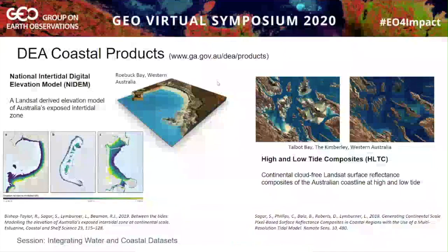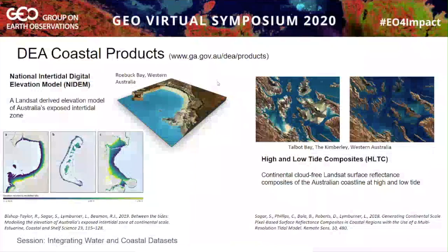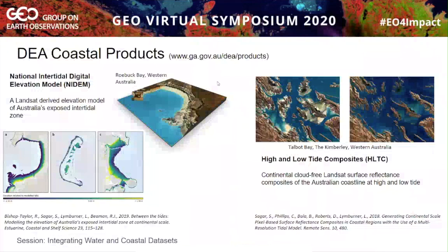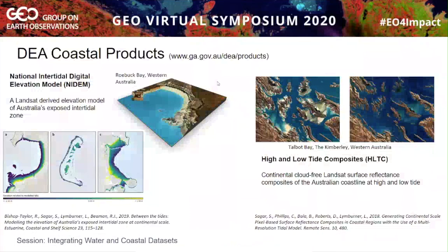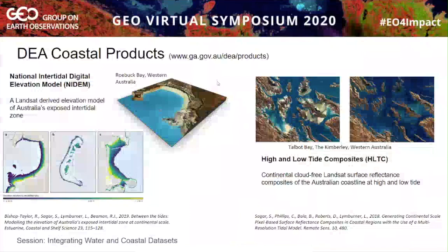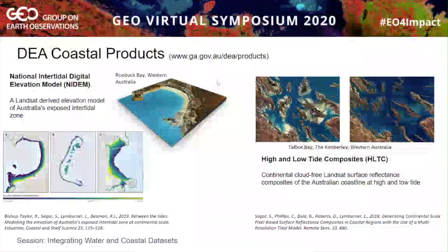Products we've already developed include a national intertidal digital elevation model called NITEM, which uses the full 30 years of the Landsat archive across Australia to produce an intertidal elevation model — essentially a DEM covering the intersection between land and sea that is traditionally very hard to survey using conventional methods. This product improves the interface for things like inundation modelling, providing a much better transition from land through to sea. We also have high and low tide composite products — cloud and noise-free visualisations of the coastline across Australia at different environmental epochs, which are important for habitat modelling, monitoring, and mapping.